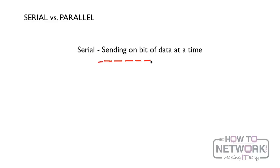That means I'm sending one piece of data at a time. This piece of data has to be sent before I can send the next piece of data. So you can see there's a limit to how much data I can send at any one point.